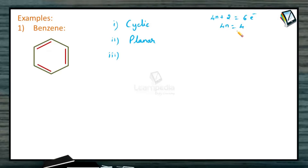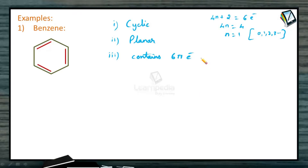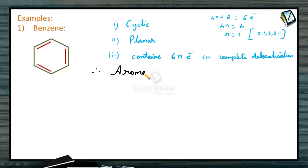Checking: 4n+2 = 6, so 4n = 4, meaning n = 1. Since n can be 0, 1, 2, 3, etc., it obeys Huckel's rule. Benzene possesses 6 pi electrons in complete delocalization. That is why benzene is an aromatic compound, as it satisfies all the necessary conditions.